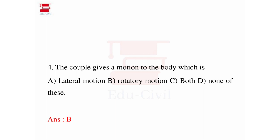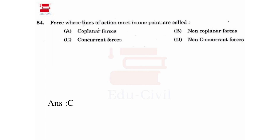Forces whose line of action meet in one point — what do we call them? Concurrent forces. Option C is correct. Non-concurrent means they do not meet at one point. Coplanar means they meet in one plane; non-coplanar means they do not share one plane. Collinear means they act along one straight line; non-collinear means otherwise. Forces meeting at one point are concurrent forces.